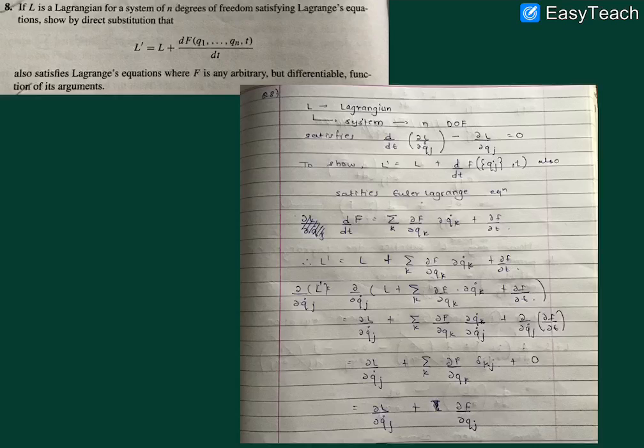Also satisfies Lagrange's equations, where F is an arbitrary but differentiable function of its arguments. So what we are given is that there is a Lagrangian L for a system of degree of freedom n, and L satisfies the Lagrange's equations of motion.